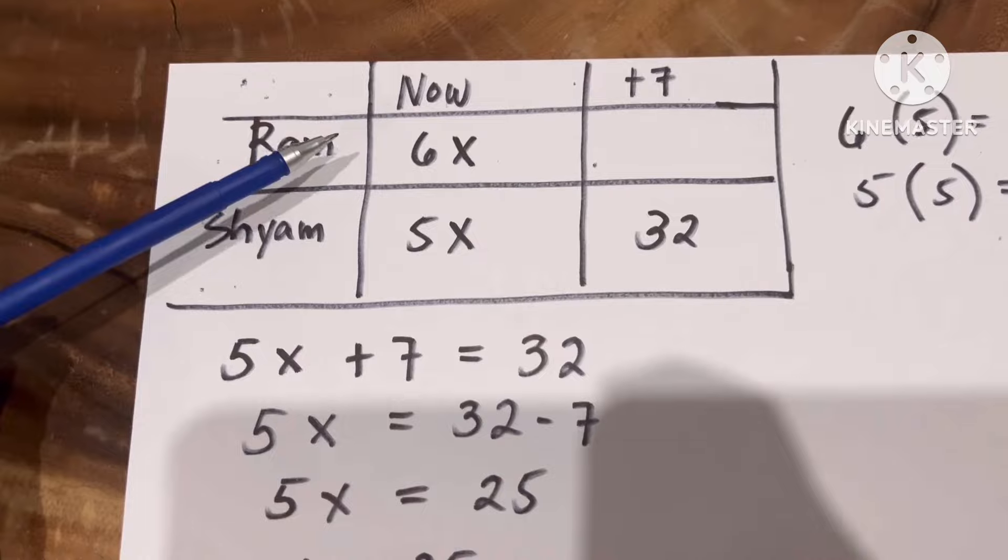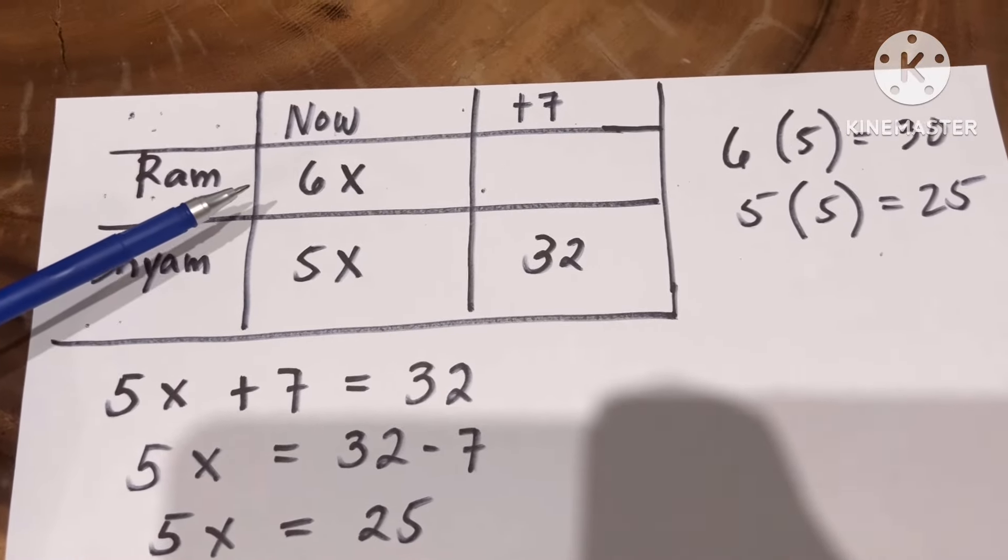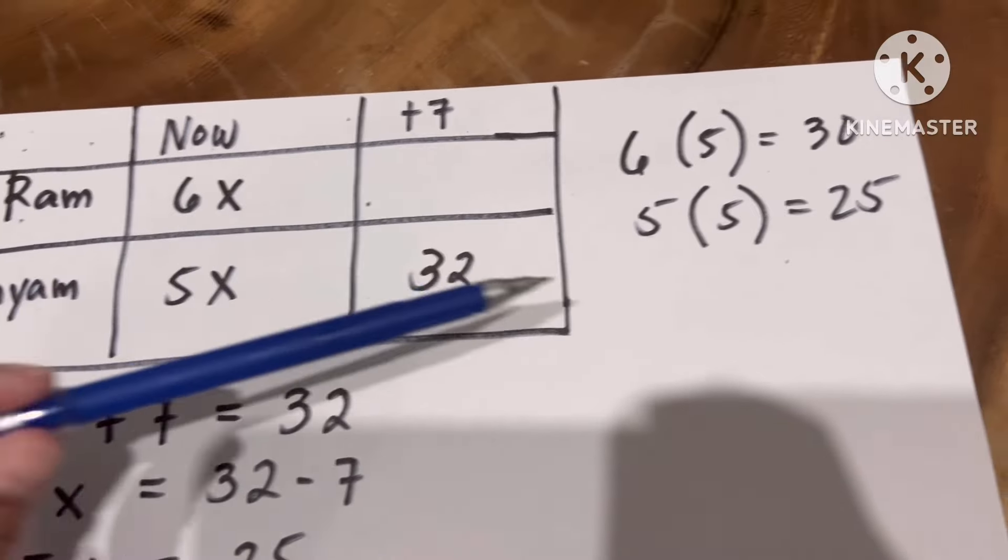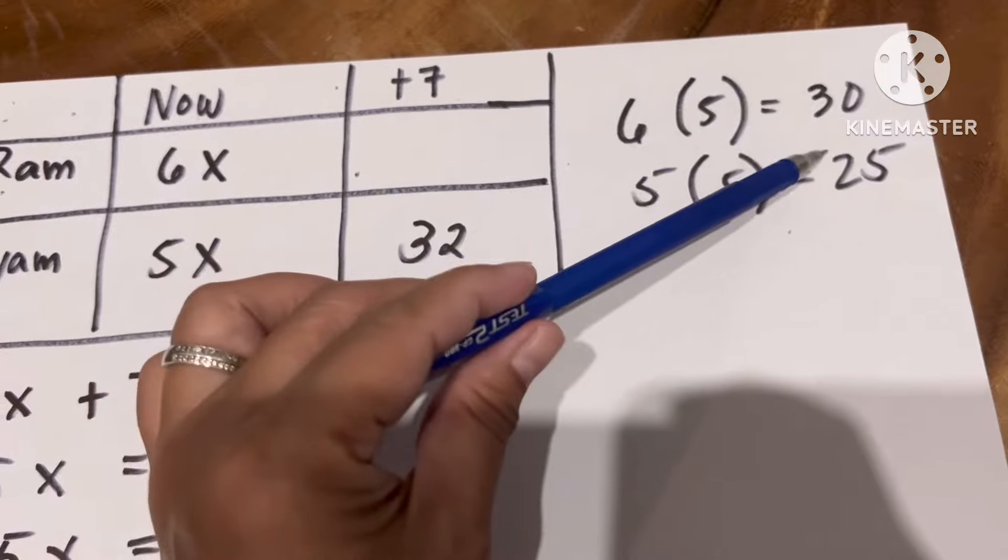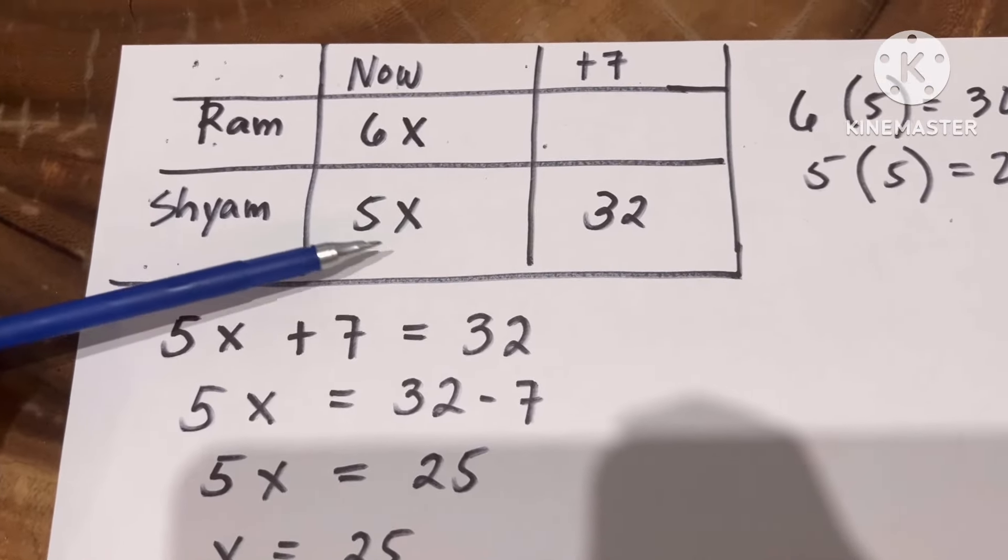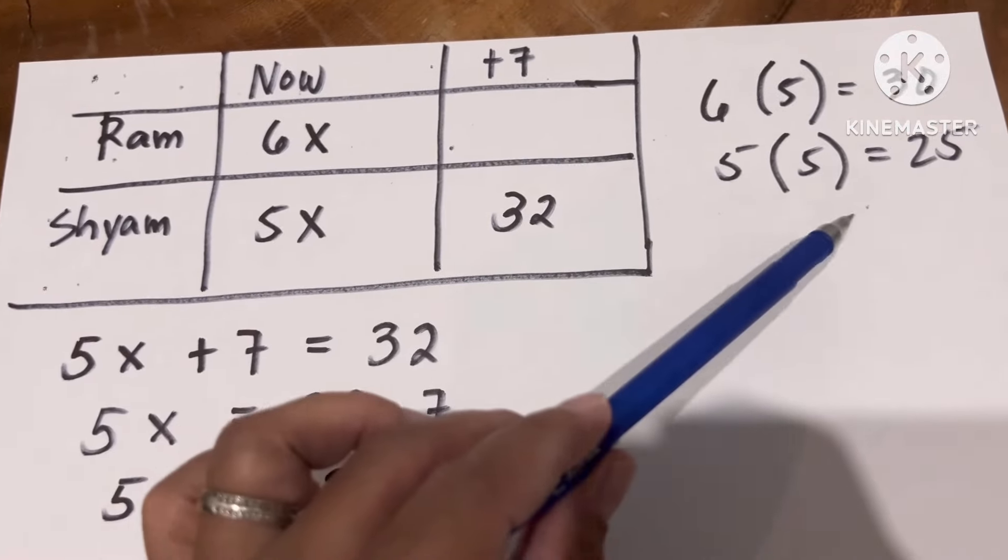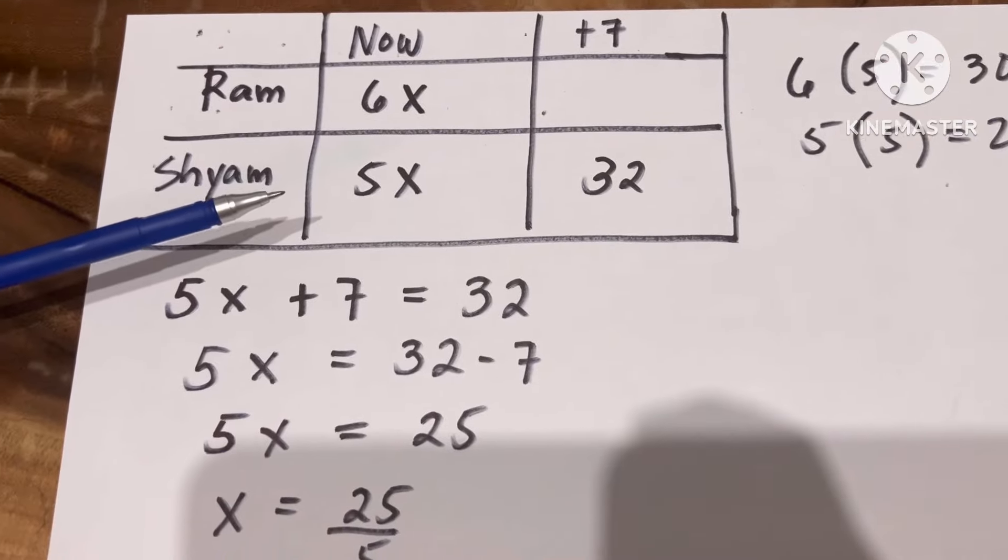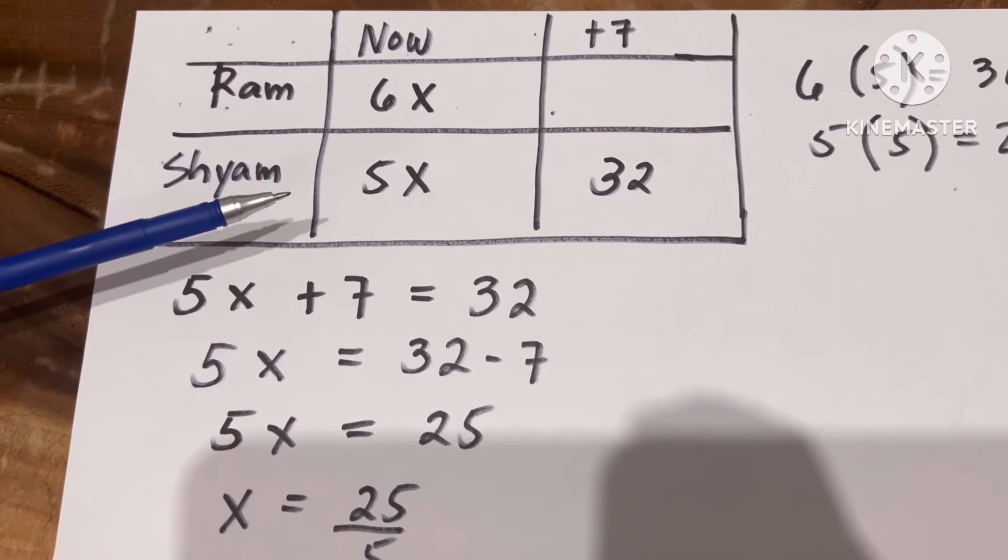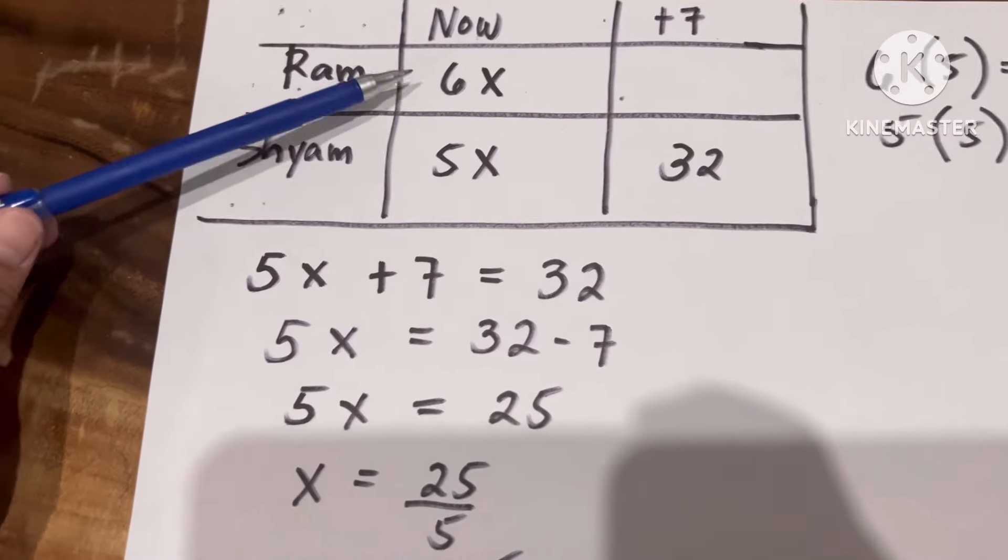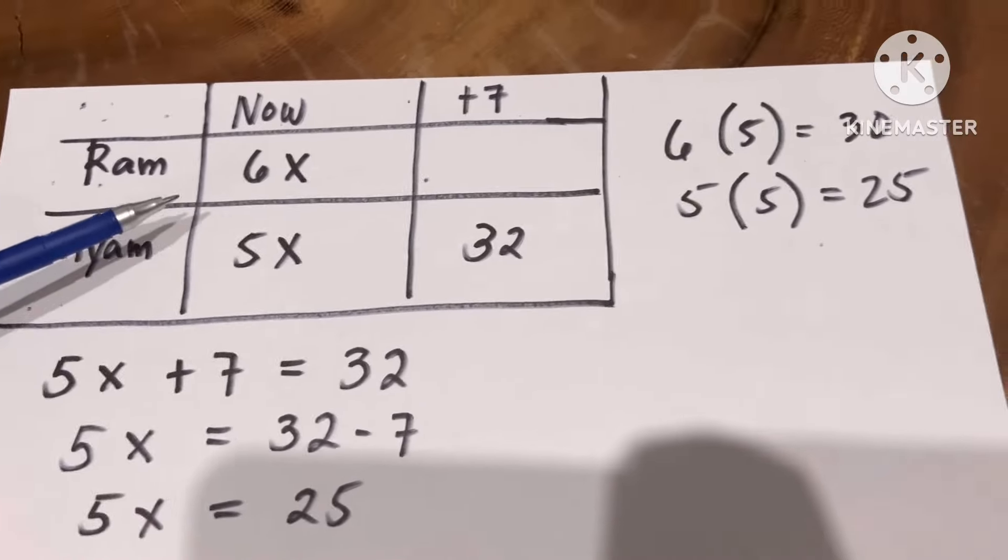Going back to our equation, if we substitute the value of X, which is 5, into Ram's equation 6X, that will become 6 times 5 equals 30. And for Shyam, it's 5X, so 5 times 5 is 25. In that case, the present age of Ram will be 30.